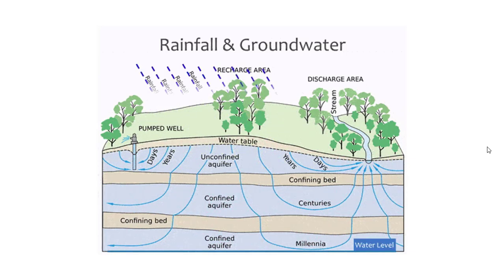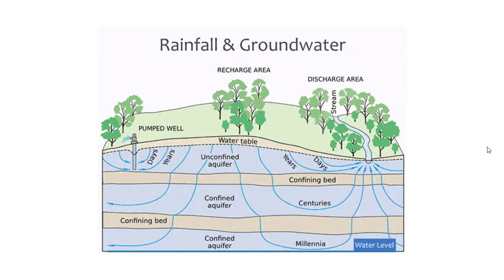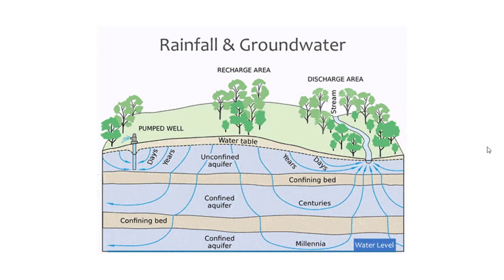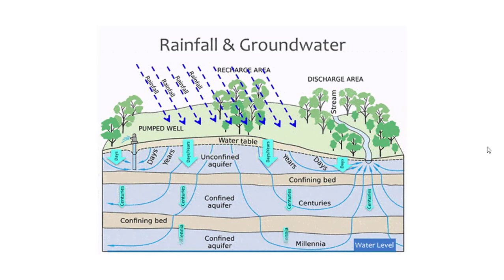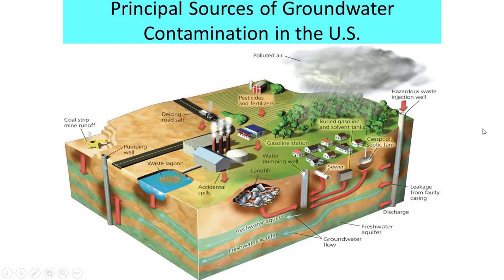So groundwater is really important and it moves in such different ways. Some of it can move so quickly, straight into the stream, just barely below the surface, but then some of it takes so long to ever reach back to us again. The tricky part is that you can't see it and you can't be sure what's happening. When contamination occurs, some common places that it can happen include coal mines, road salt, and pesticides and fertilizers that can make their way down.